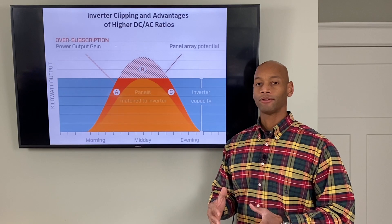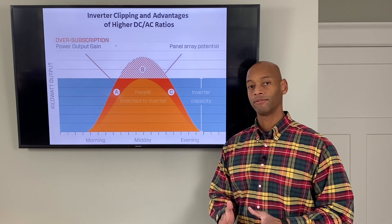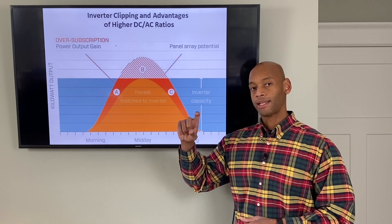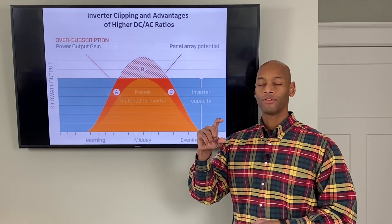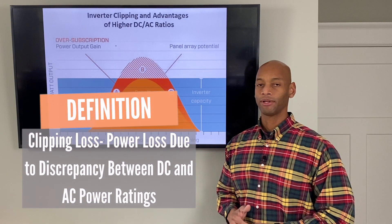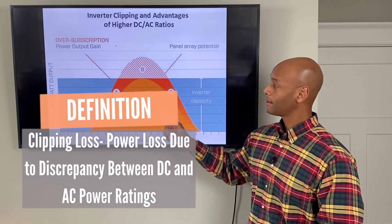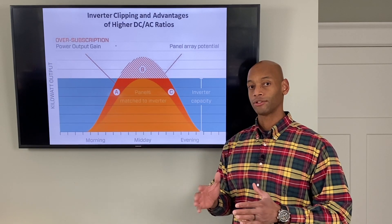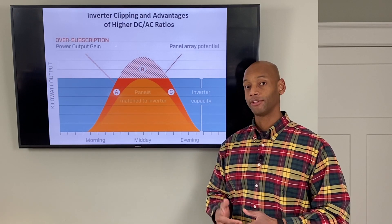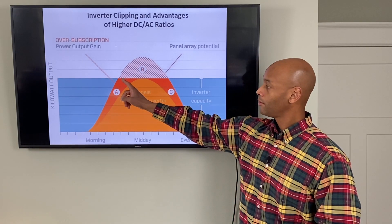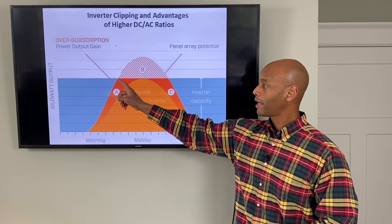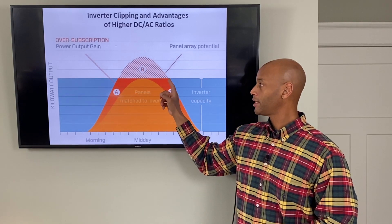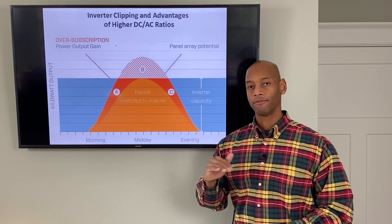If you hook those solar panels to an inverter or group of micro inverters with an AC power rating of only six kilowatts, then that difference — that 1.5 kilowatt difference — is called the clipping loss or clipping factor. What it's showing is that under very high sunlight and cool temperatures, where solar panels can operate at maximum efficiency, the solar panels have the potential to produce more power, but the power output is being limited by the inverter's power rating.